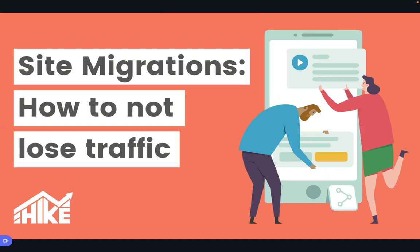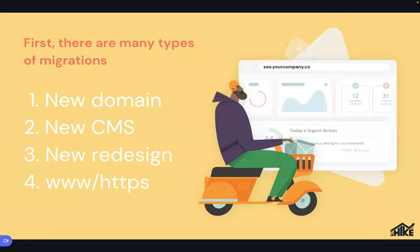What determines a migration? There are lots of things that count. The first is moving to a new domain — like moving from a .tv to a .com, changing the TLD — or completely rebranding, like changing your domain name entirely from one word to another. That's probably the most common form of migration.